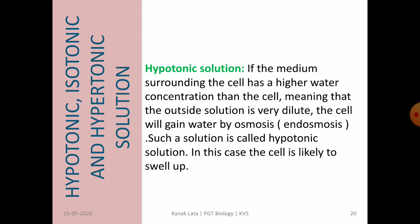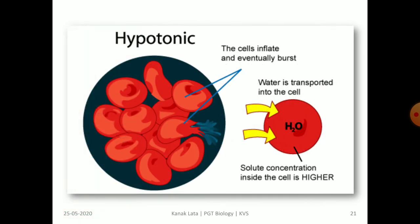In a hypotonic solution, the medium surrounding the cell has a higher water concentration than the cell, meaning the outside solution is more dilute. The cell will gain water by osmosis — called endosmosis — as water enters from the external environment, causing the cell to swell up. The cells inflate and may eventually burst because the solute concentration inside the cell is higher.